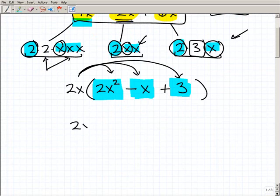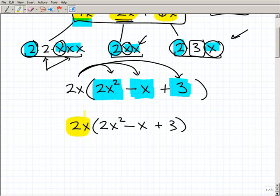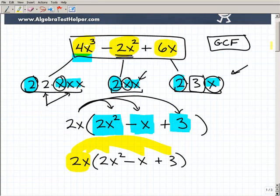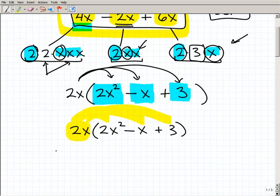We just factored this out, 2x times (2x² - x + 3), because if you went ahead and used the distributive property, and you took 2x times all three of these things, you would get back to our original polynomial. And 2x is considered the greatest common factor.